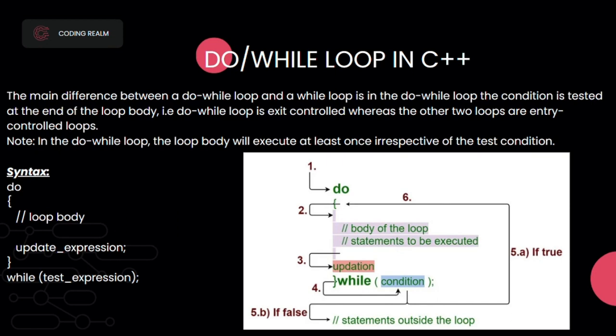Now the do-while loop in C++. The main difference between a do-while loop and a while loop is that in the do-while loop, the condition is tested at the end of the loop body — meaning the do-while loop is an exit controlled loop, while the other two are entry controlled. In the do-while loop, the loop body will execute at least once irrespective of the test condition. The syntax is: write 'do', open braces, write the body and update expression, then write 'while' with the condition.